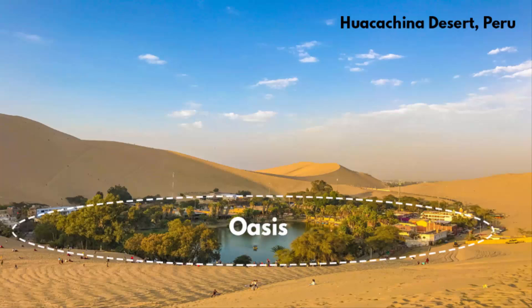Oasis can be naturally formed or it can also be man-made. Basically in a desert, if you find a small region where there is water on the surface, it is called an oasis.